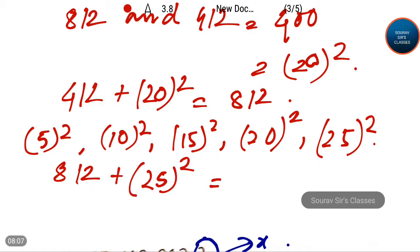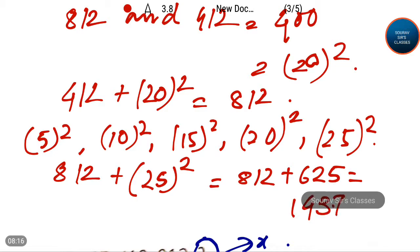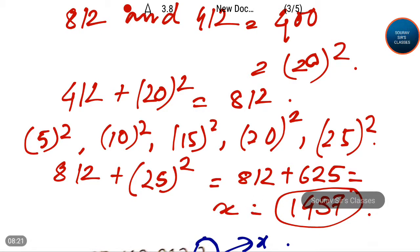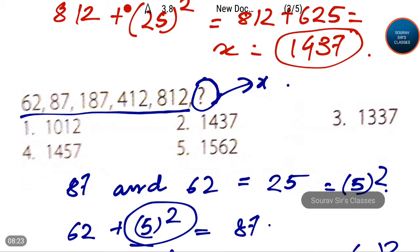So this is equal to 812 plus 625, that is equal to 1437. So x is equal to 1437, which is option 2. So option 2 is the correct answer.